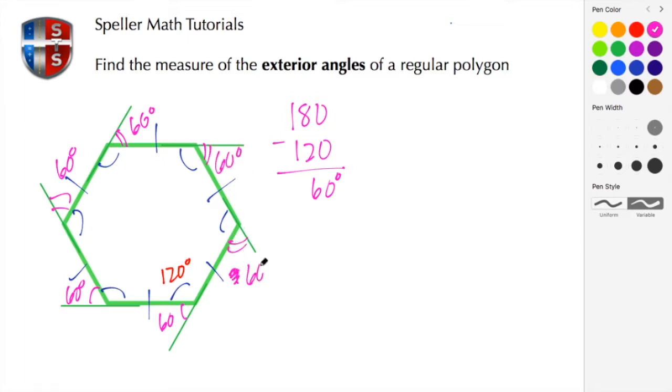All right, the next thing that I want you to notice is that the sum or total of these exterior angles is going to be 360 degrees. So each one of the angles measure 60 degrees, and we have six of them. So that's actually 60 times 6.